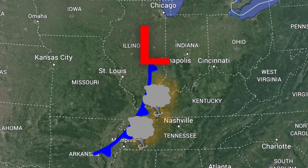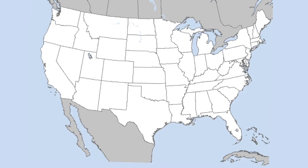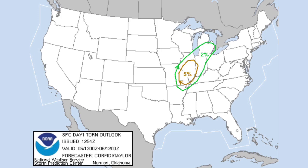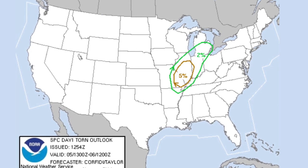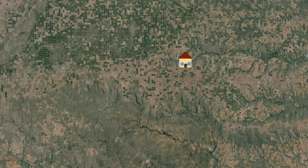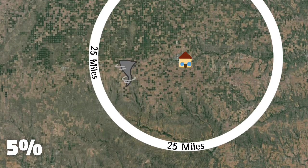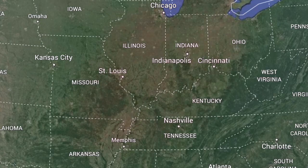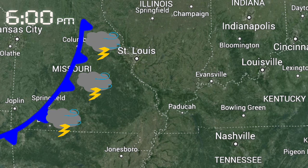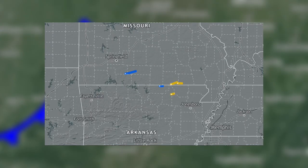And, spoiler alert, they were. While the National Weather Service was expecting these storms to happen, they issued a slight risk for Illinois, Indiana, and much of the surrounding states, which included a 5% chance for tornadoes, with Evansville located on the edge of the 2% and the 5%. The tornado percentage means there is a given chance for a tornado to occur within 25 miles of a certain point. And at around 6 p.m. is when storms started to fire along the cold front in Missouri, moving east, and dropping the first tornadoes of the outbreak a few hours later.